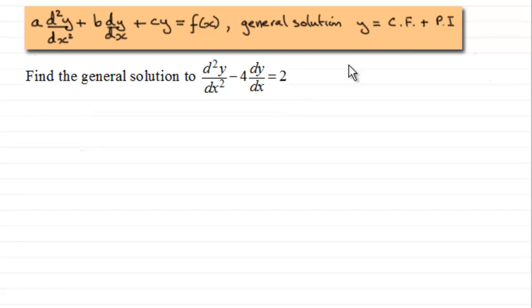So first of all, we need to work out the complementary function. That's when the left-hand side equals zero. So if we start by just looking at that part where we need to solve d²y/dx² - 4dy/dx = 0.